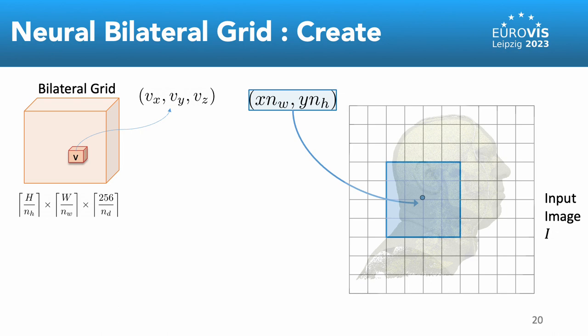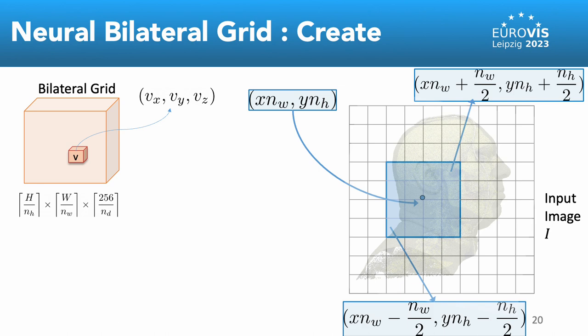The pixels that contribute to this voxel will lie in the region centered at this point. The width and height of the region are determined by the grid sampling factors. The value of the voxel in the bilateral grid is then calculated by the weighted combination of all these pixel intensities in this region.